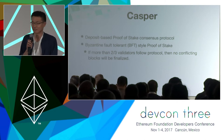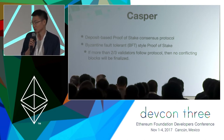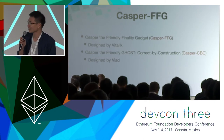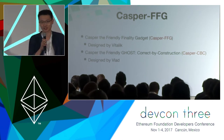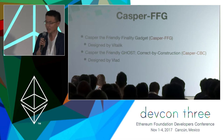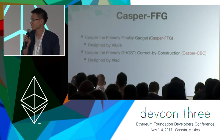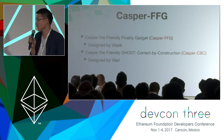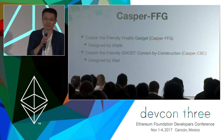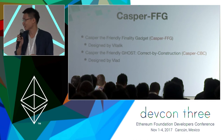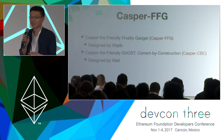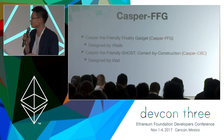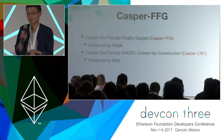Otherwise, if the majority is less than two-thirds, the system will get stuck — this is called a liveness issue, and it's a situation we want to avoid. Right now we have two versions of CASPER in our internal research team: one is designed by Vitalik, called CASPER FFG (Friendly Finality Gadget), and another design by Vlad, called CASPER CBC. He will have a presentation this afternoon, so don't miss it.